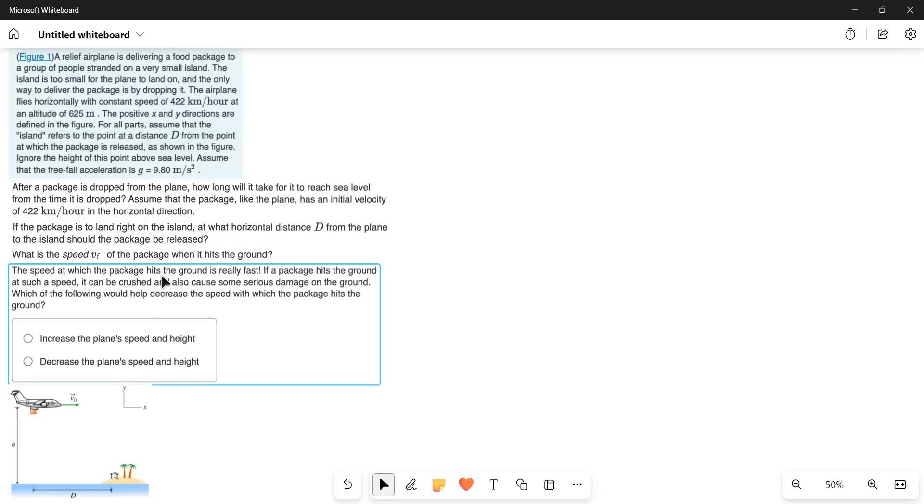First, let us do first three bits. He is saying that the initial velocity of the package is 422 km per hour. And then we have to find out the time at which it strikes the ground or island. So, for that what I do is, it is at an altitude of 625 meters.